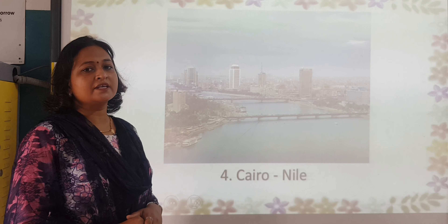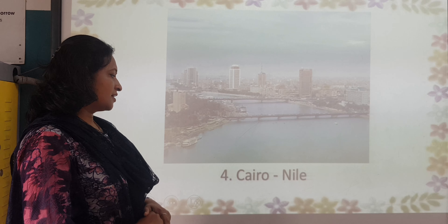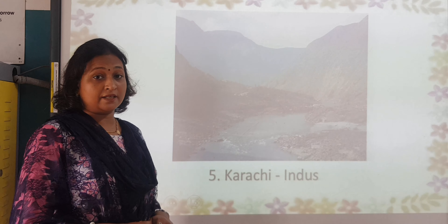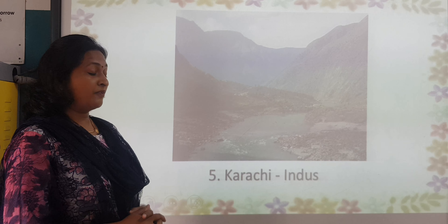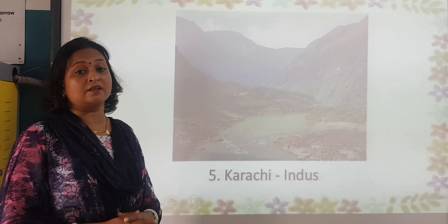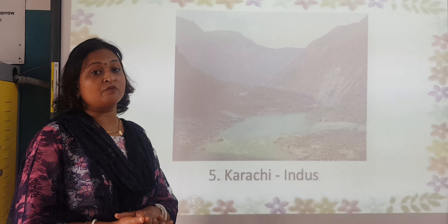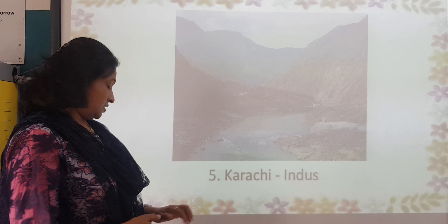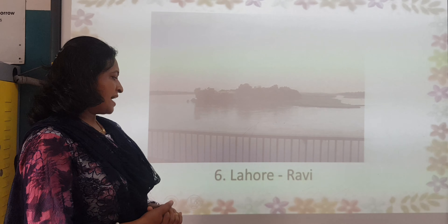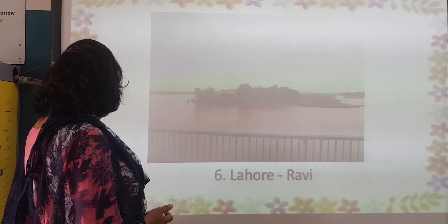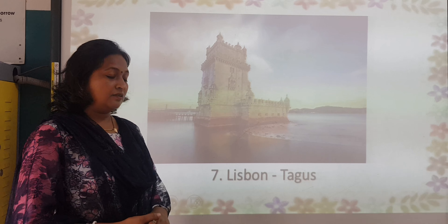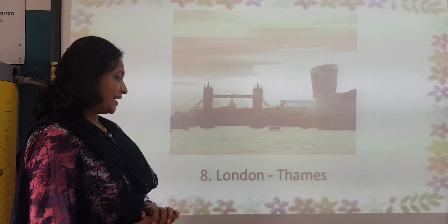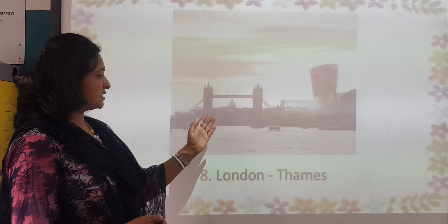The Nile River is situated in Cairo — it's a very famous river when you learn your history lessons, and it has a very significant role. Next is Karachi, and then the Ravi River, which you will find in Lahore.